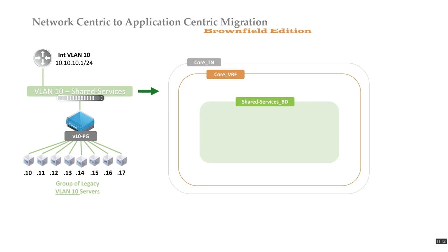In ACI, VLANs are used as a classifier or attachment mechanism. For example, I'll connect this virtual machine with VLAN 10 or connect a load balancer on VLAN 10 — it's not used for anything more than that. The bridge domain takes the place of an actual VLAN in ACI; VLANs are just used as a classification or attachment point into the ACI fabric.